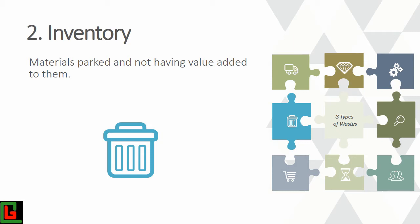If operator two has hundreds of pieces in front of him and finds a problem with one piece, he might just pick another piece and start working without informing anyone. With less inventory, there is less chance that problems get hidden in the system. Reducing inventory should be a key effort to improve quality.